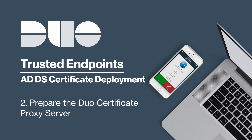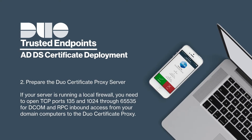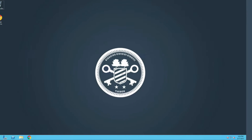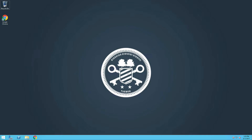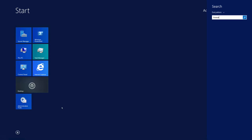Next, prepare your server for deployment of the Certificate Proxy. If your server is running a local firewall, you need to open TCP ports 135 and 1024 through 65535 for DCOM and RPC inbound access from your domain computers to the Duo Certificate Proxy. Log in to your Windows Server. To permit access to these ports in the Windows Firewall, open Windows Firewall with Advanced Security.